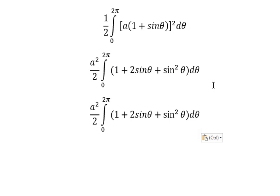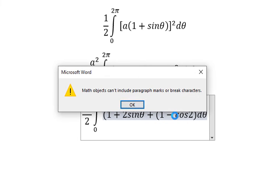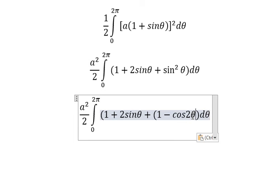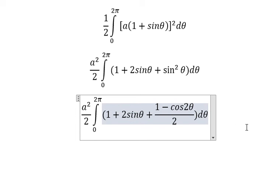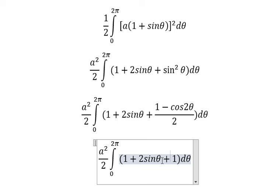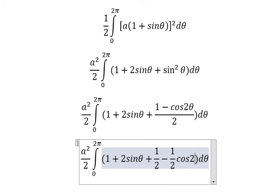And we know that sine θ squared, that's about 1 minus cosine 2θ, 1 minus cosine 2θ over 2. This one we have 1 over 2 minus 1 over 2 cosine 2θ.